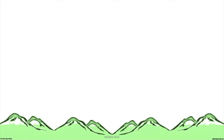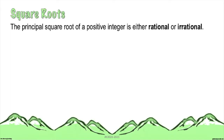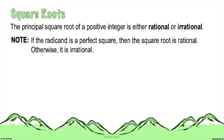To continue the lesson, take note that the principal square root of a positive integer is either rational or irrational. It actually depends on the value of the radicand. If the radicand is a perfect square, then the square root is rational. Otherwise, it is irrational.